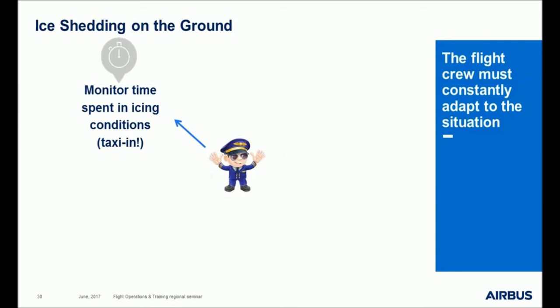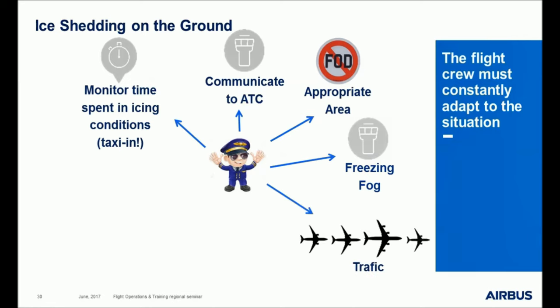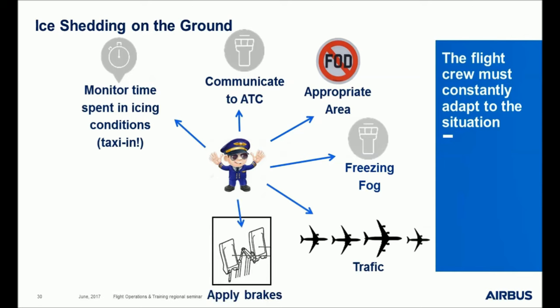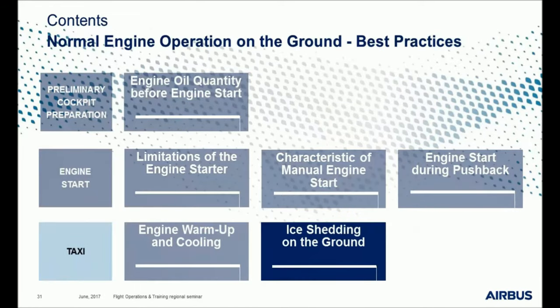The flight crew must adapt to the situation each time ice-shedding must be applied, monitoring the time spent in icing conditions closely. Before any ice-shedding action, the flight crew needs to: communicate with airport ground control; choose a suitable area with low risk of foreign object damage; take into account freezing fog conditions reported by ATC; take into account overall traffic on the ground; apply brakes before thrust increase; and if the aircraft starts to move, immediately set the throttle to idle. Be particularly cautious if the ground surface is slippery. It is really important to apply the ice-shedding procedure to avoid any operational disruption.